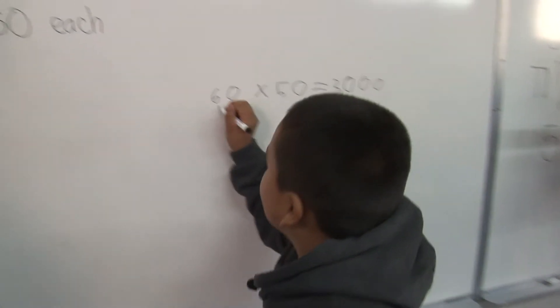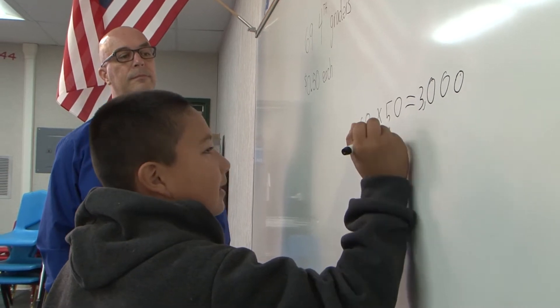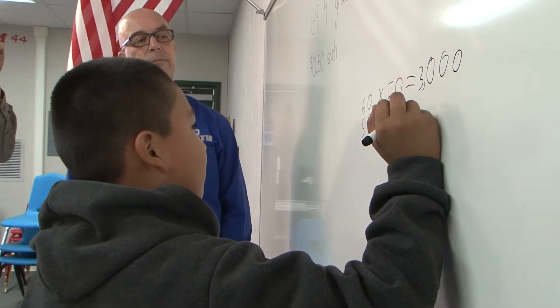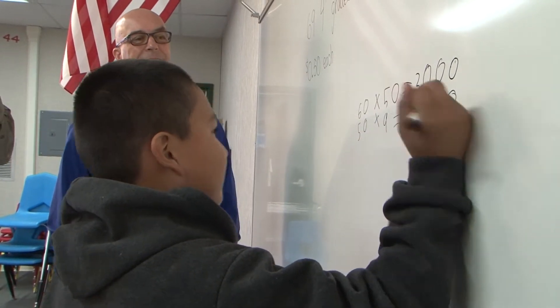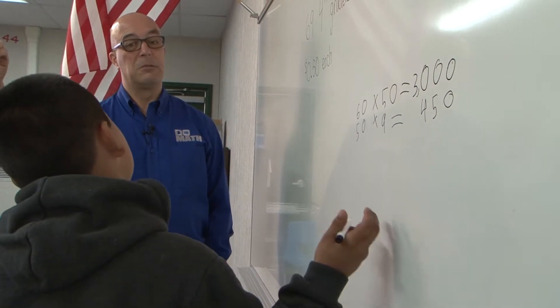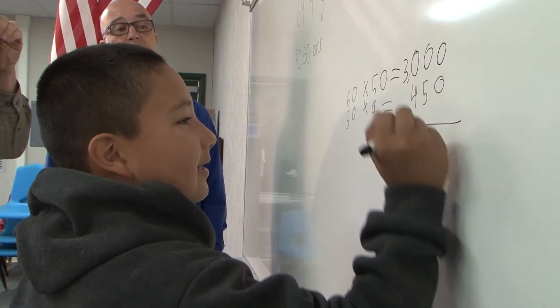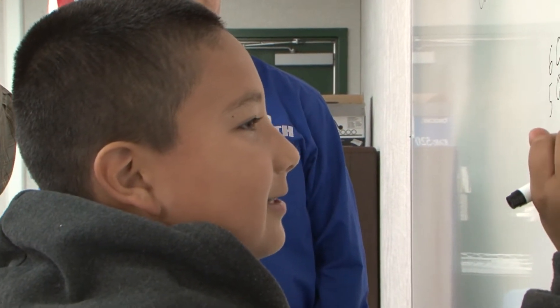And then it'll be 50 times nine. And that'll be 50, no, 45. There you go. You had the two numbers there. Yeah. And then nine times zero, which will be zero. Right. And then we add this, that'll be zero, five, four, 3,450.